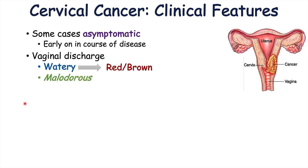Both the Bethesda and CIN systems ultimately end with cervical cancer. As cancer progresses it becomes invasive, moving through stages 1 to 4. In late stages, cervical cancer can metastasize to extra-pelvic lymph nodes, the liver, lungs, and bones.